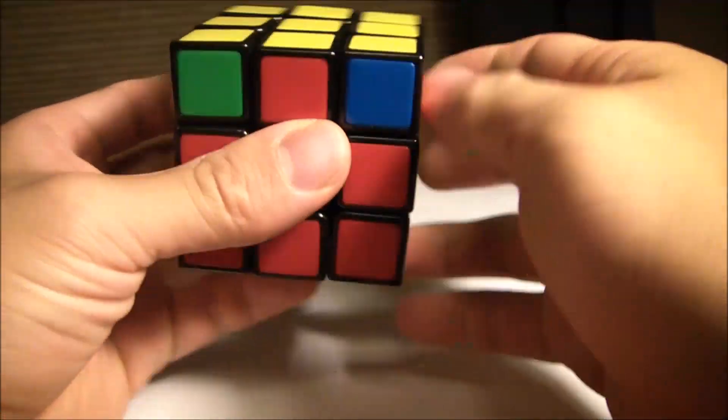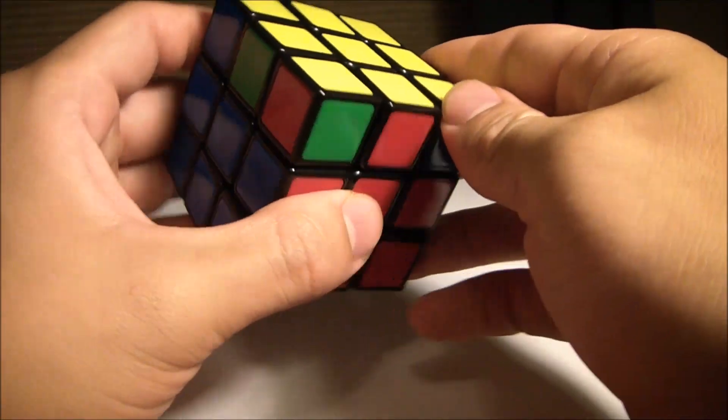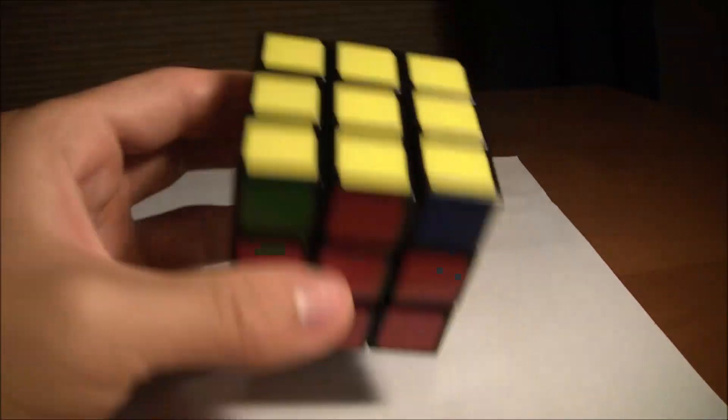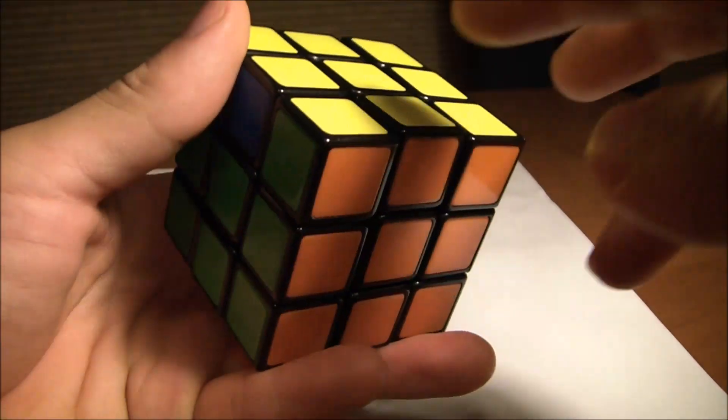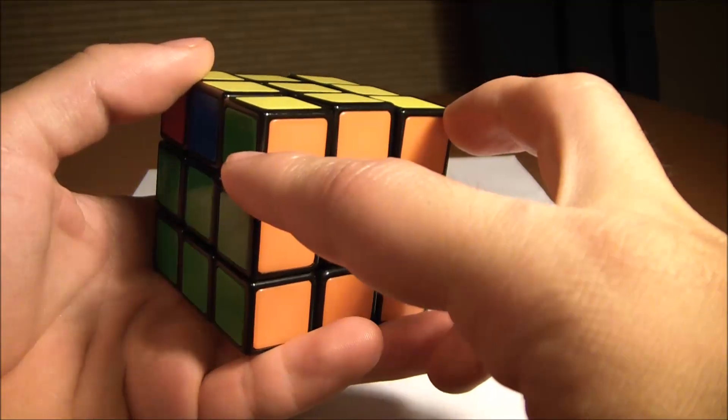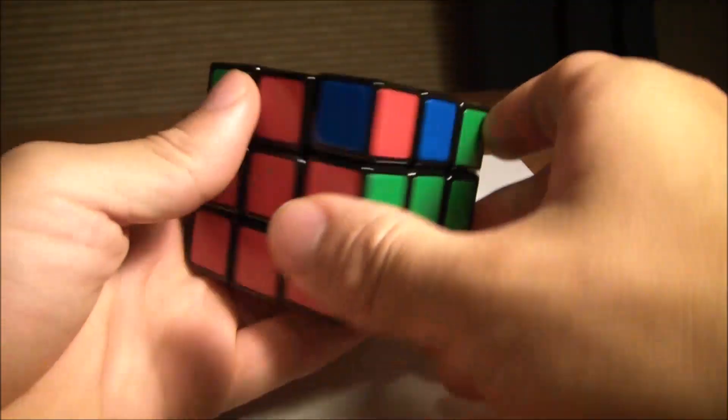We'll look into how to do this. In this case, the two correct yellow corner pieces are right here, adjacent to each other. You just place them in the back.